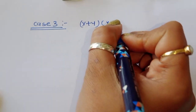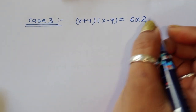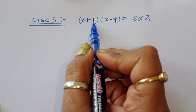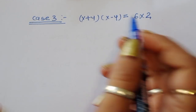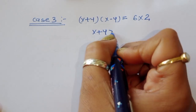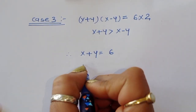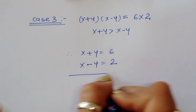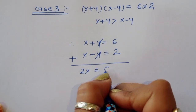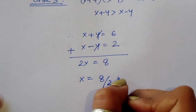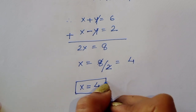Case 3: (x + y)(x - y) = 6 × 2. Here x + y = 6 and x - y = 2. Since 6 > 2, the condition x + y > x - y is satisfied. Adding the two equations: 2x = 8, so x = 8/2 = 4. The value of x is 4.